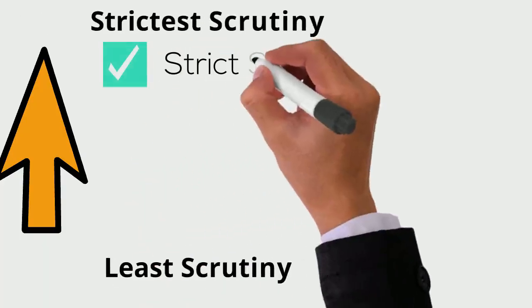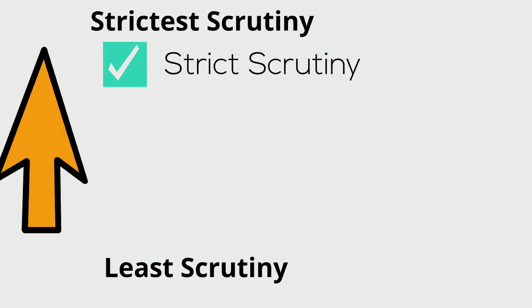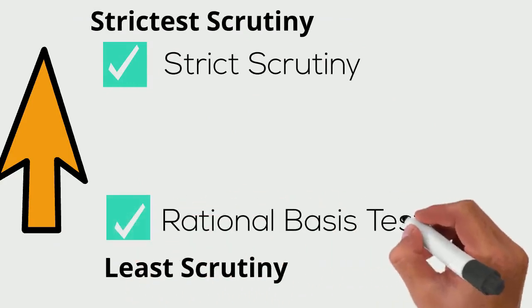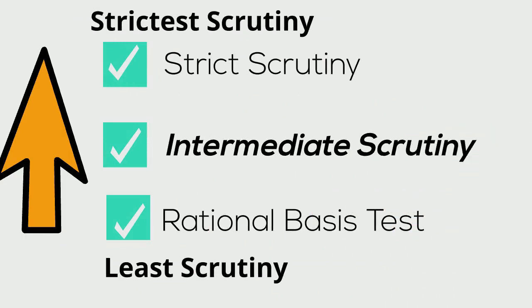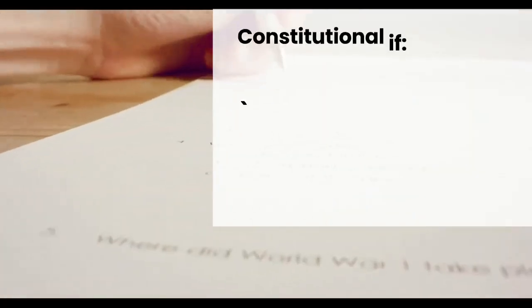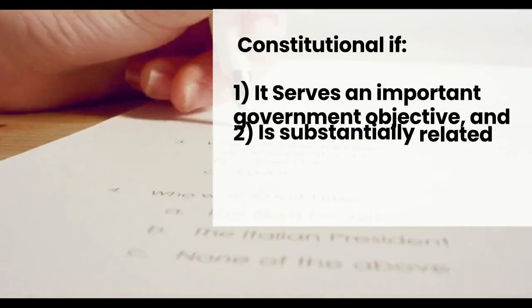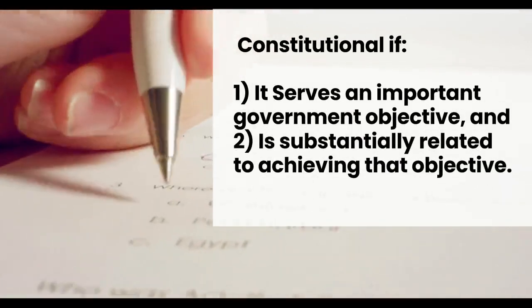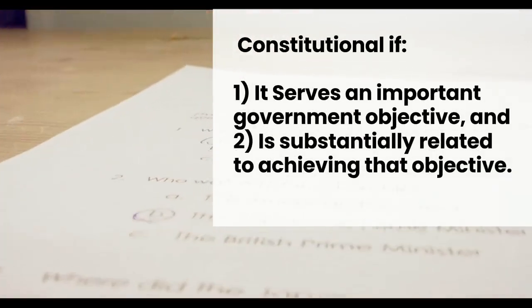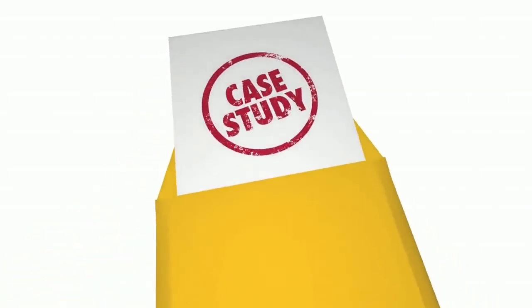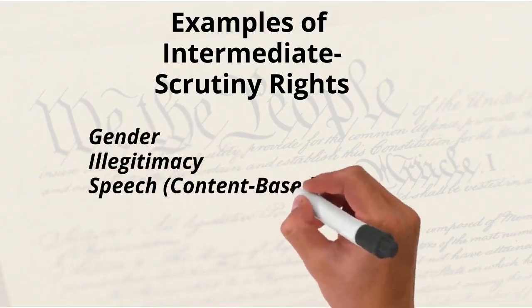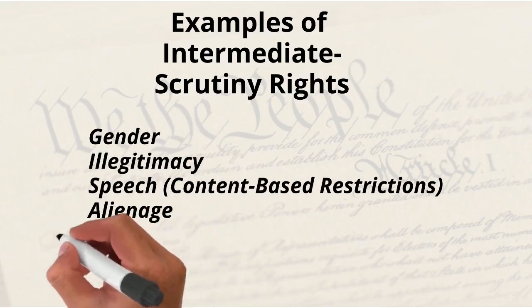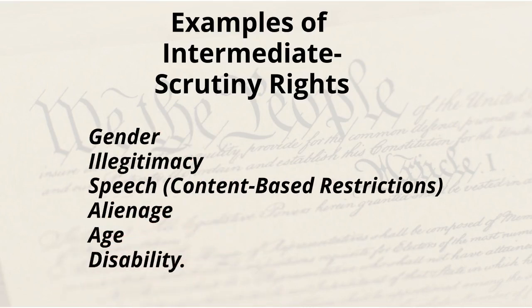There's a mid-level of scrutiny less demanding than strict scrutiny but more rigorous than the Rational Basis Test. Under intermediate scrutiny, a law will be deemed constitutional if it serves an important government objective and is substantially related to achieving that objective. Examples where the Supreme Court used intermediate scrutiny are gender, illegitimacy, content-based restrictions on speech, alienage, age, and disability.